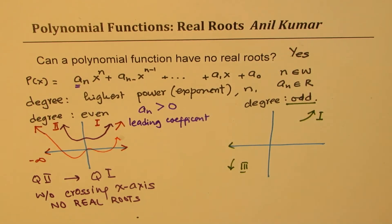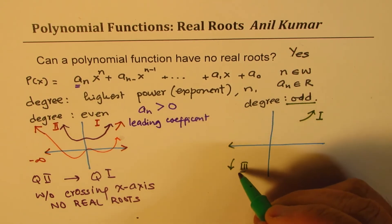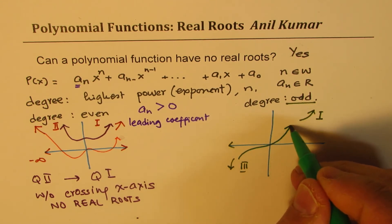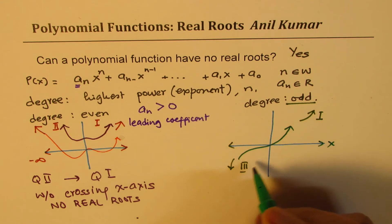In the other case, when we are talking about the odd degree function, to move from quadrant three to one, you have to cross the x-axis. So in this case, you have to cross x-axis.